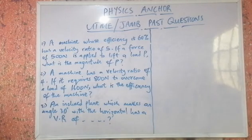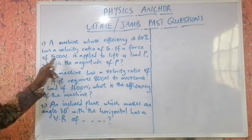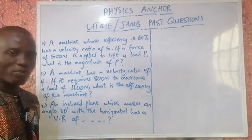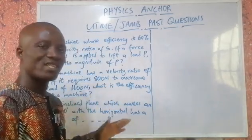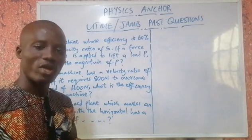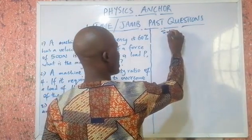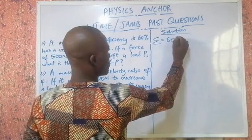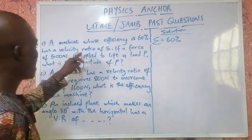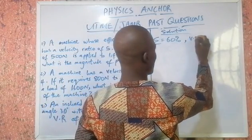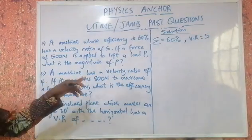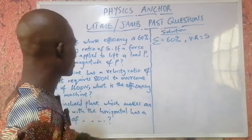In question number one, a machine whose efficiency is 60% has a velocity ratio of five. If a force of 500 newtons is applied to lift a load P, what is the magnitude of P? We begin by listing out the parameters given: efficiency is 60%, and velocity ratio (VR) equals five.